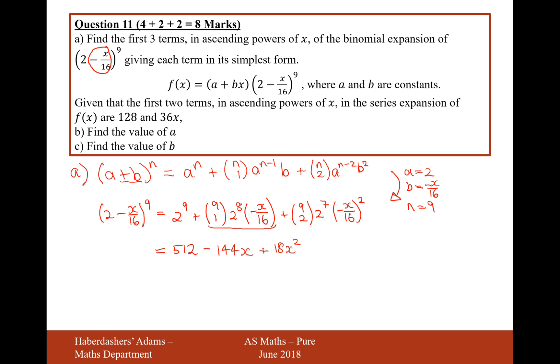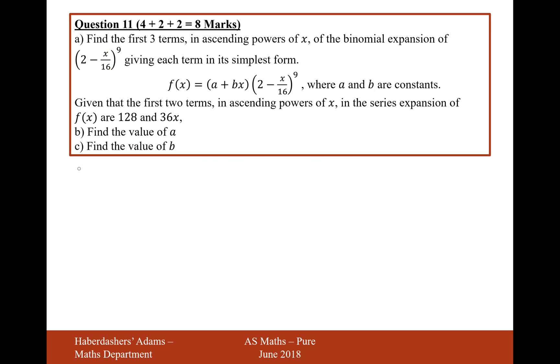Okay, so that's the answer for part A. Let's now just clear the screen, and I'll write down that it's 512 minus 144x plus 18x squared, before moving on to part B. So this is the function, given that the first two terms in ascending powers of x in the series of f of x is 128 and 36x.